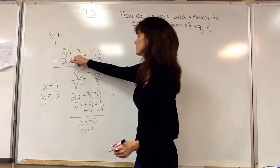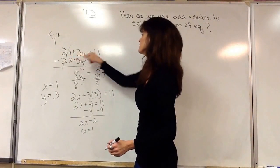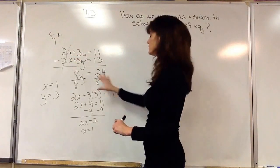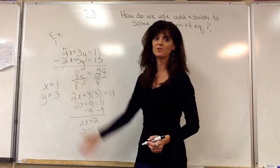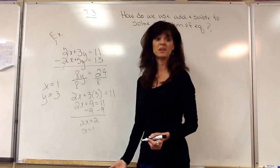And I can test that. 2 times 1 is 2 plus 3 times 3 is 9, 2 plus 9 is 11. So we see how to solve it. And of course that one's easy because it's already set up with a positive 2x and a negative 2x and it makes it easy to eliminate.